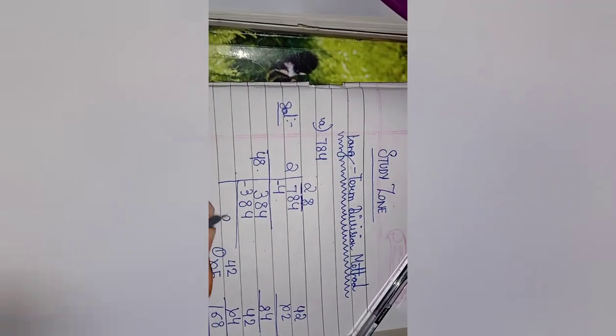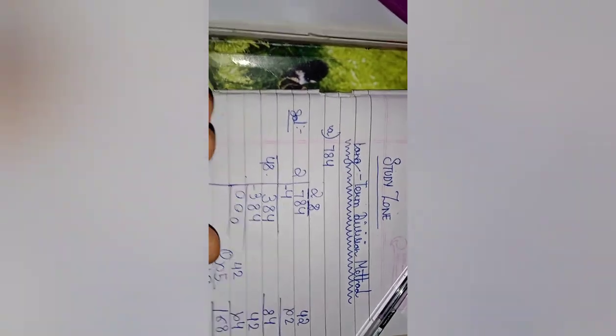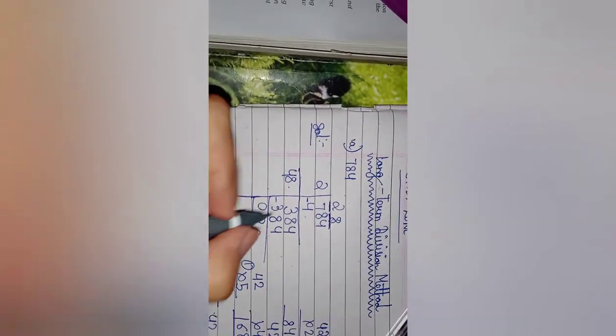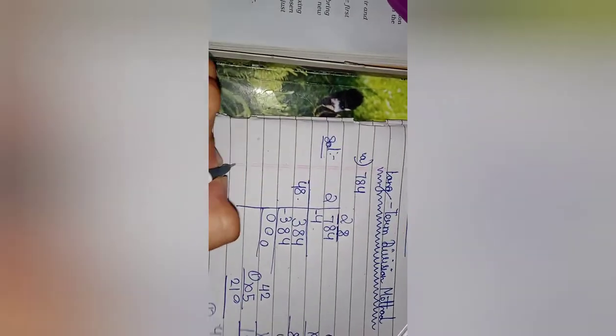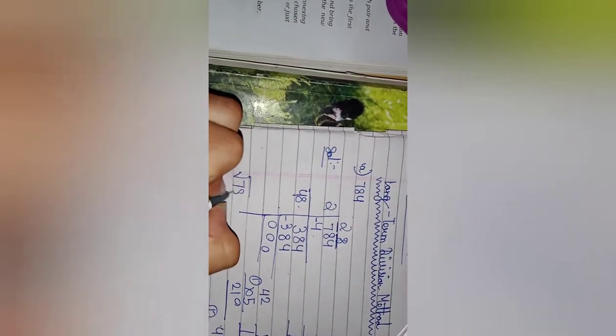So it will be 0, 0, and 0. Here we have got the square root of 784, that is 28. So we can write it as √784 = 28.